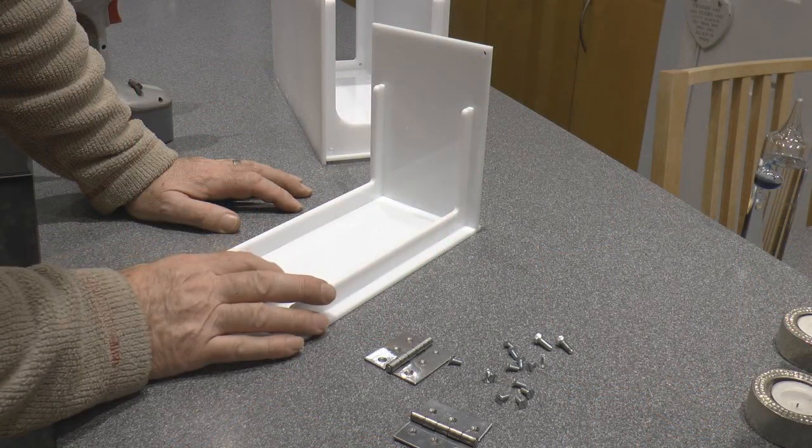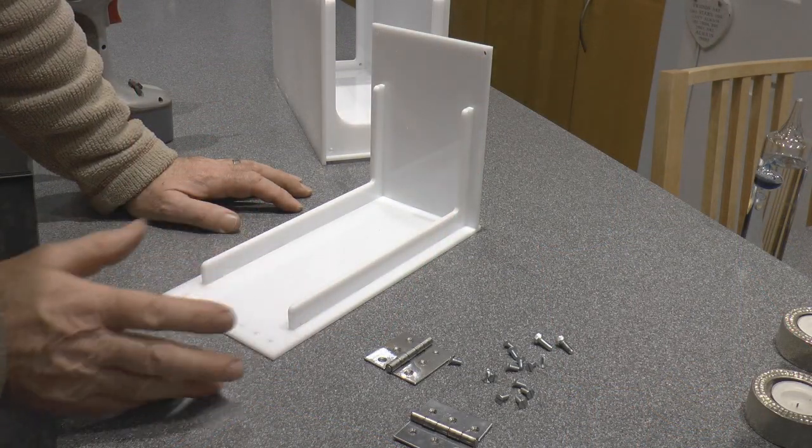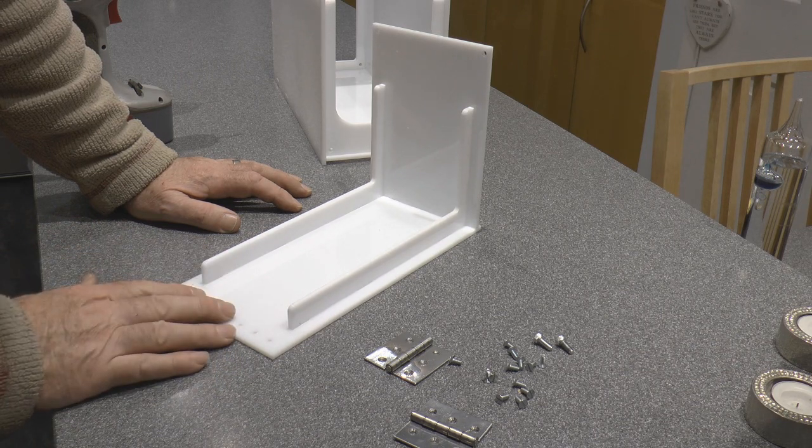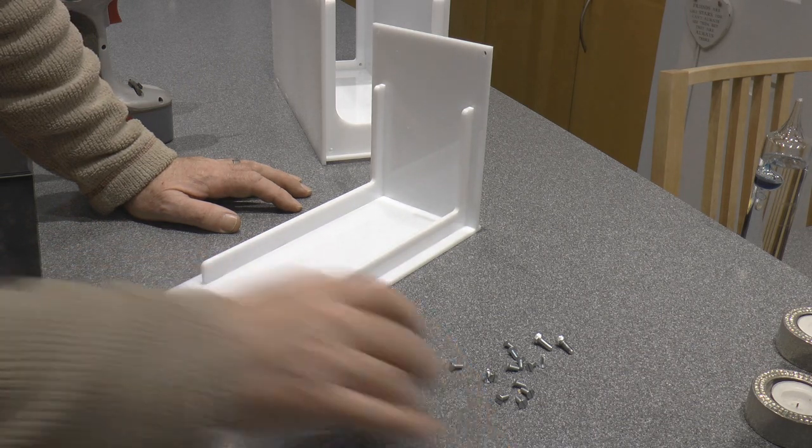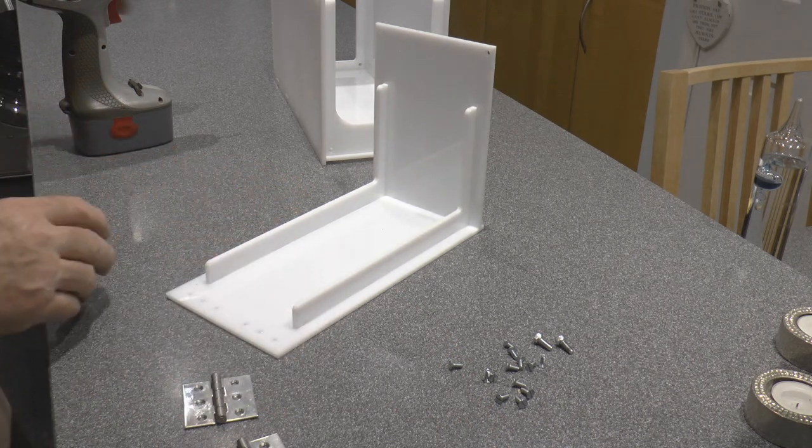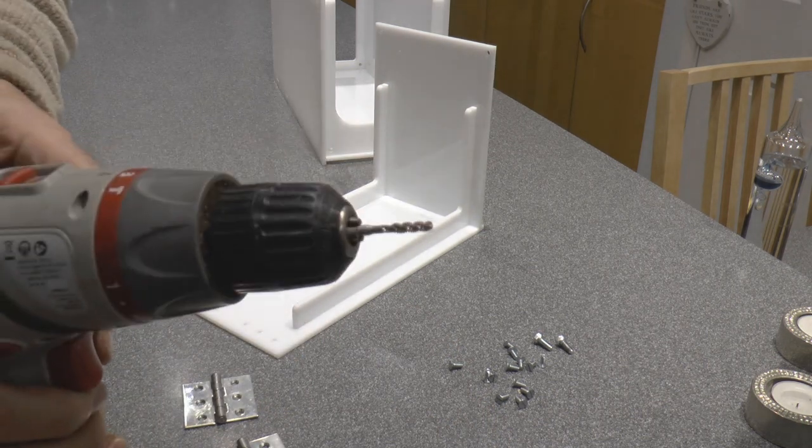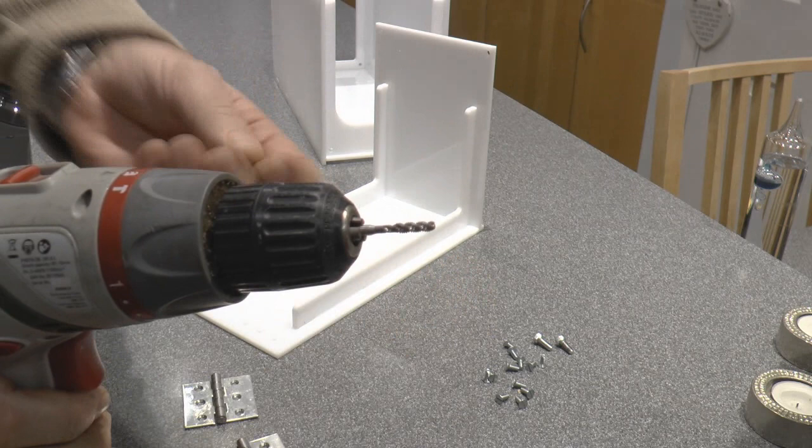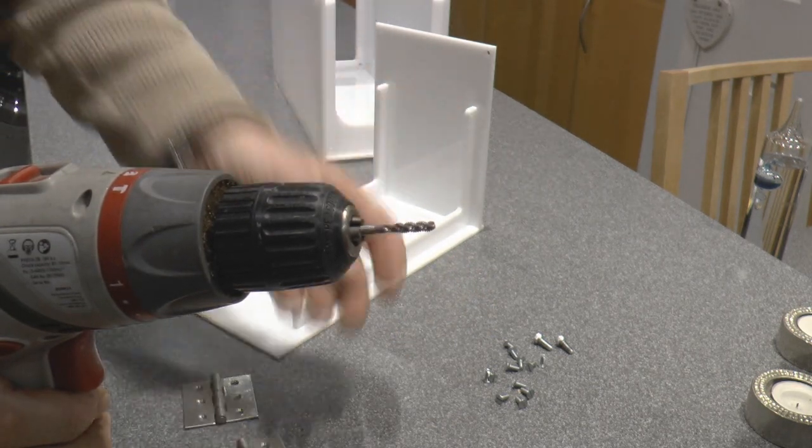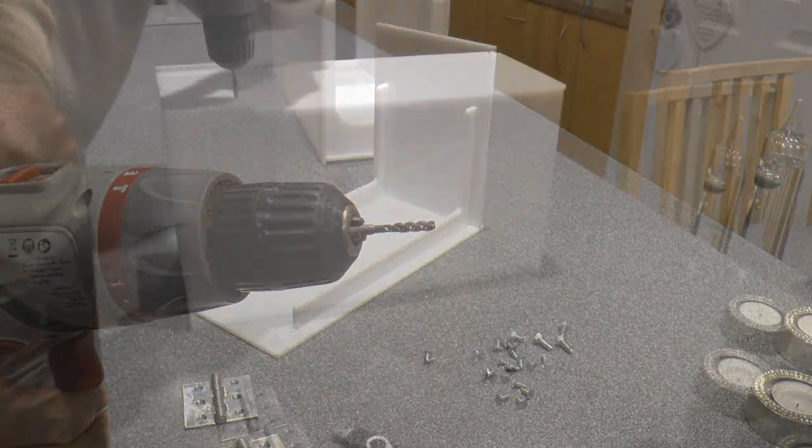So now I've made the lid for this extension box. All that remains to be done basically is to fix it in place with a couple of hinges. I'm going to use a M4 cap sunk screw but I'm going to tap the holes.